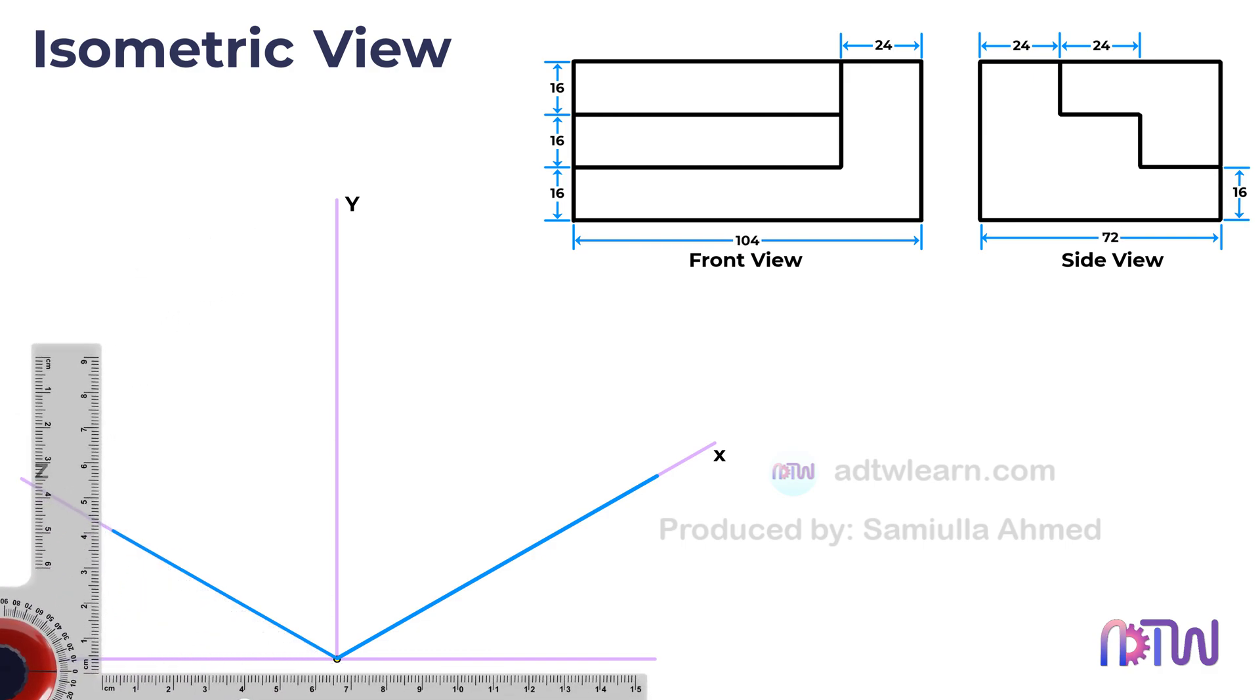Moving on to the height of the object, we can see from both views that it is 48 mm. Therefore, we'll draw a line of 48 mm and construct a cuboid outline for the object.